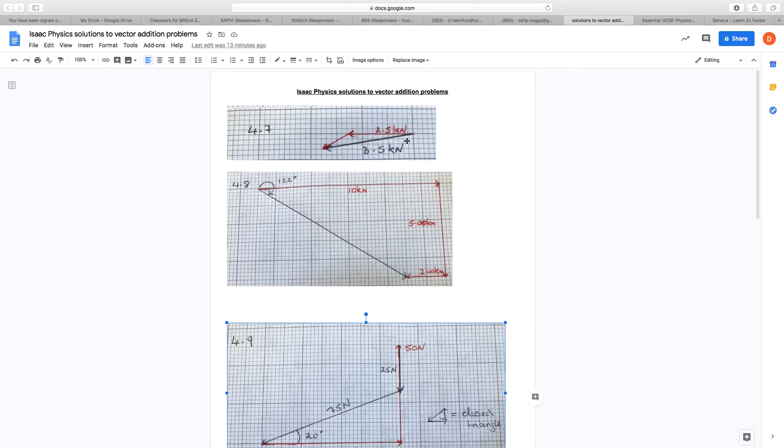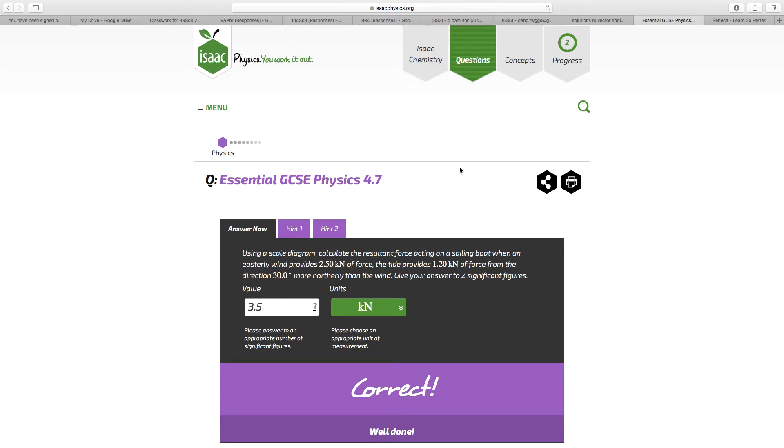So measuring the length of that 3.5 kN. So again, this is a question where I think seeing what the question is asking is the challenge rather than actually drawing the diagram. I know it looks like my 1.2 kN starts here. It doesn't. It starts here. This was the arrowhead of the 2.5 here. So my 1.2 vector runs from this point to this point.